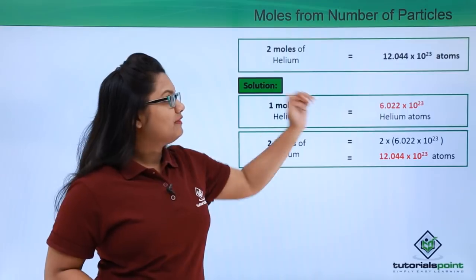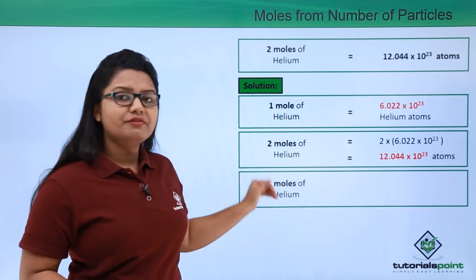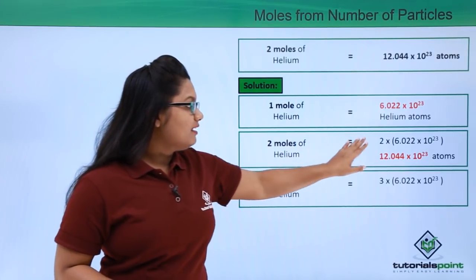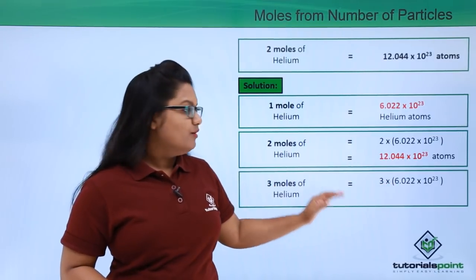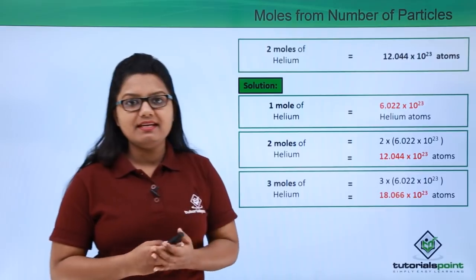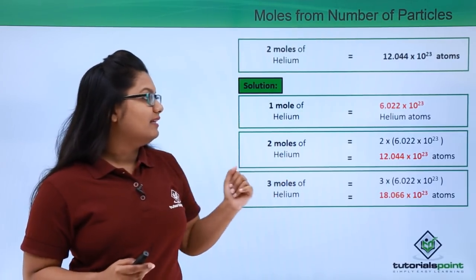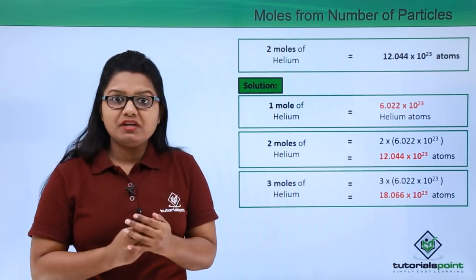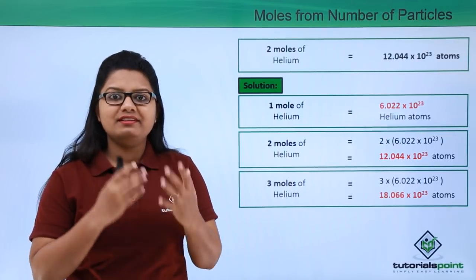Three moles of helium would have three multiplied by Avogadro's number of helium atoms, which yields 18.066 × 10²³ atoms of helium. So the formula is: one mole of any species equals Avogadro's number of atoms, molecules, or ions of that species.